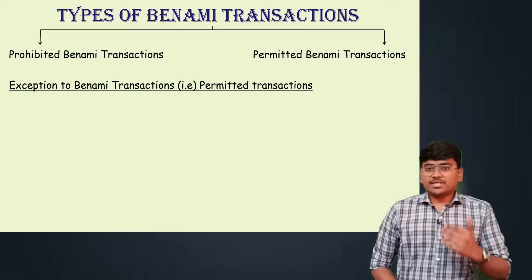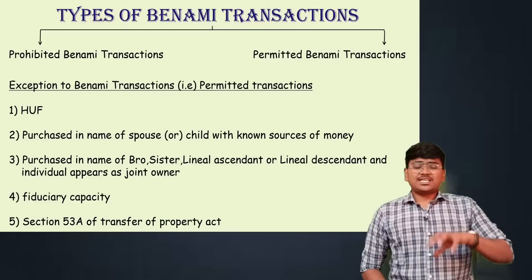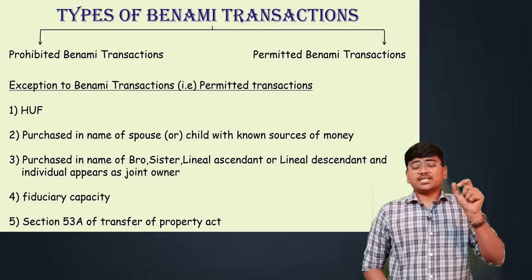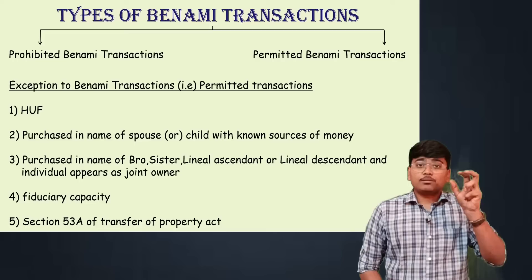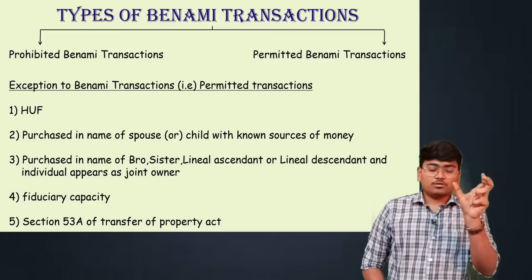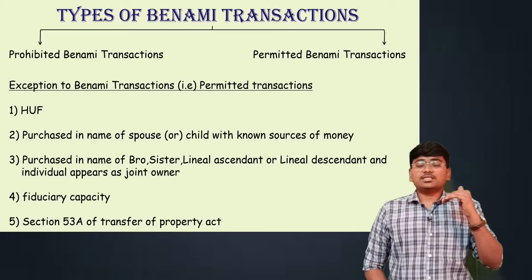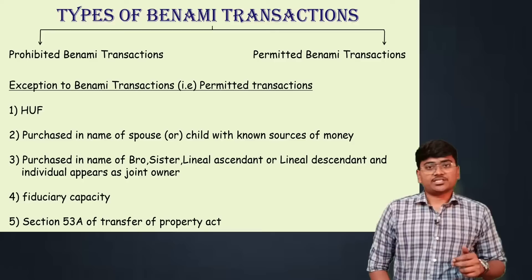The first exception is HUF and Karta. In the case of an HUF, the assets will be in the name of the Karta, but those assets are purchased from the money of coparceners. The money is not paid by the Karta, but the property is in the name of the Karta or HUF. This would typically be a benami transaction, but the act has exempted these kinds of transactions — they are permitted benami transactions.